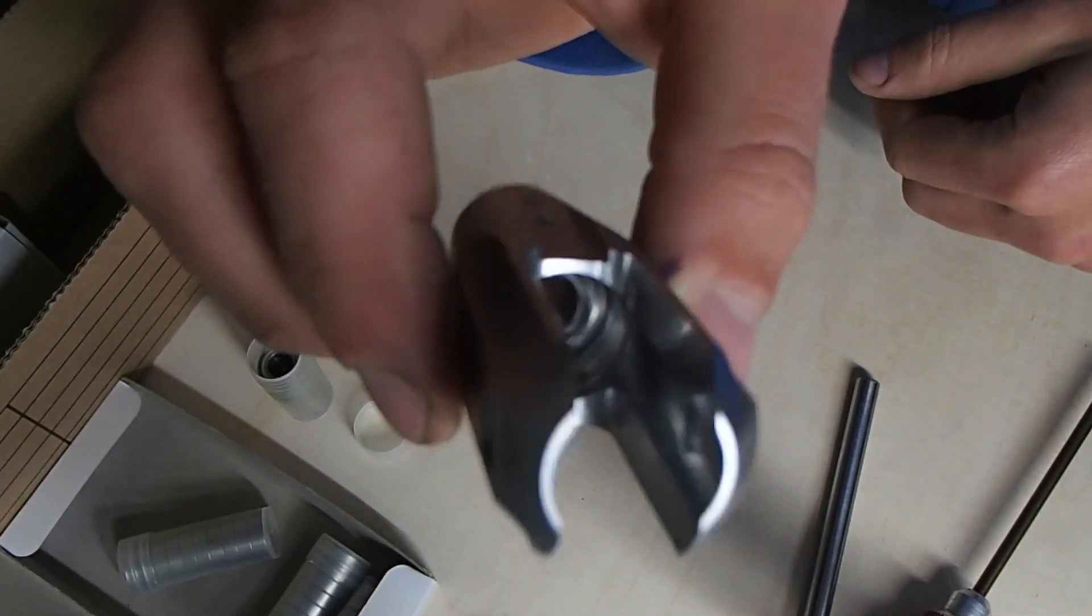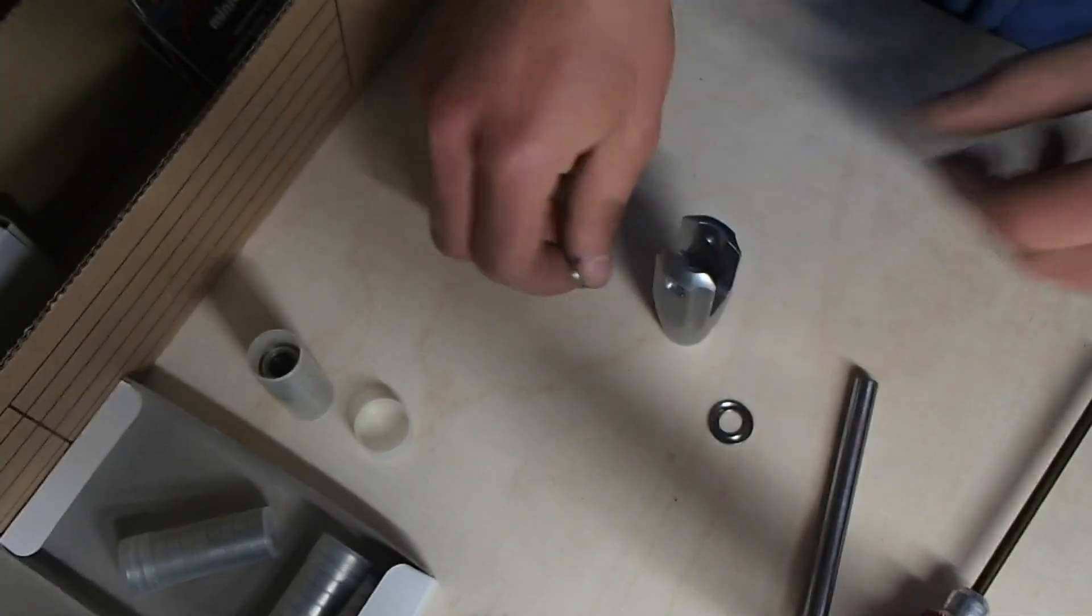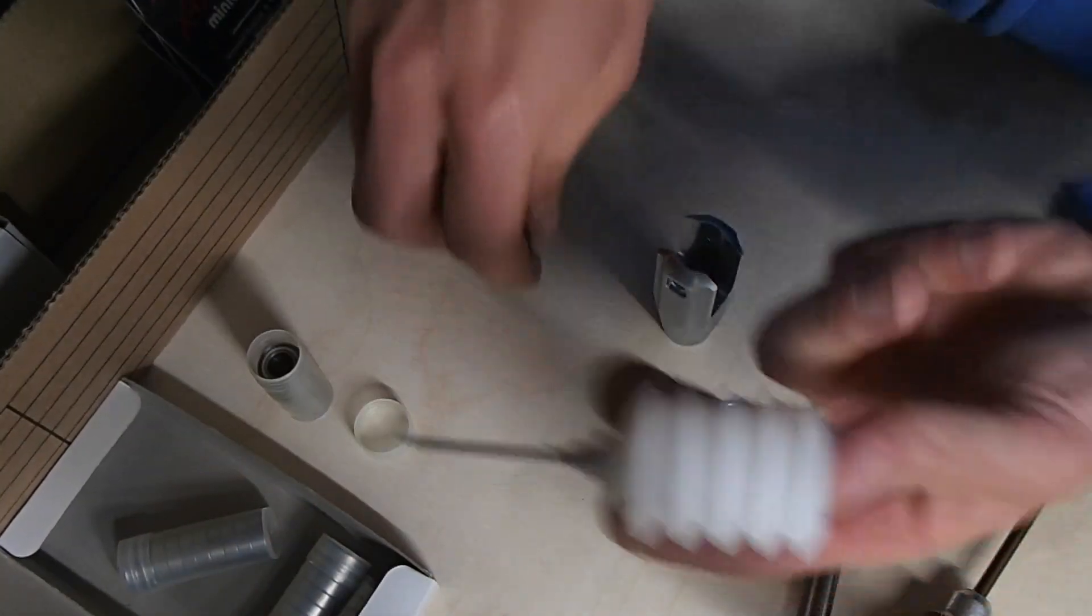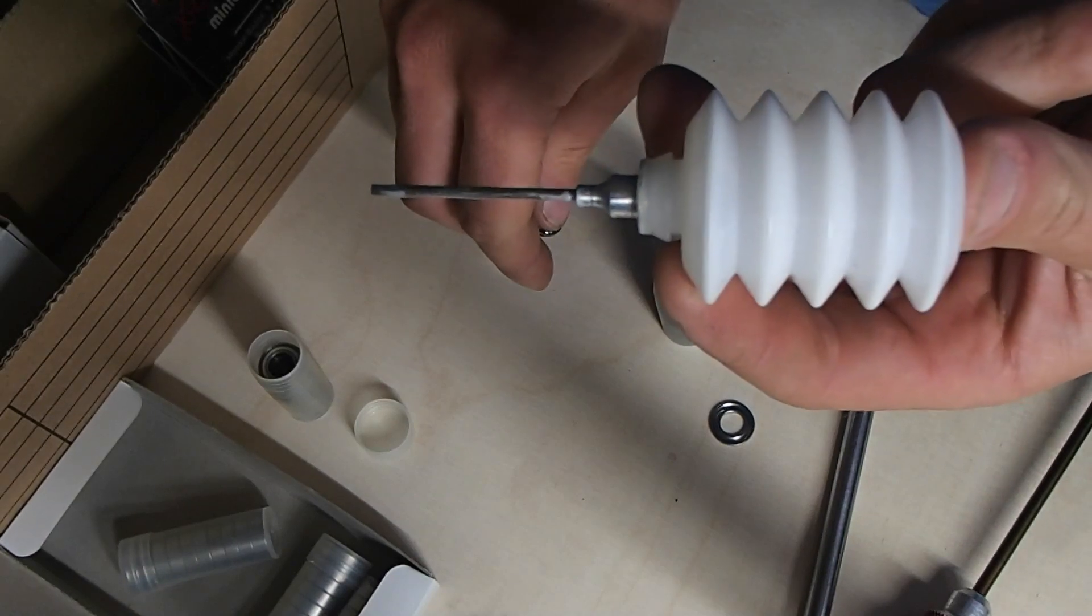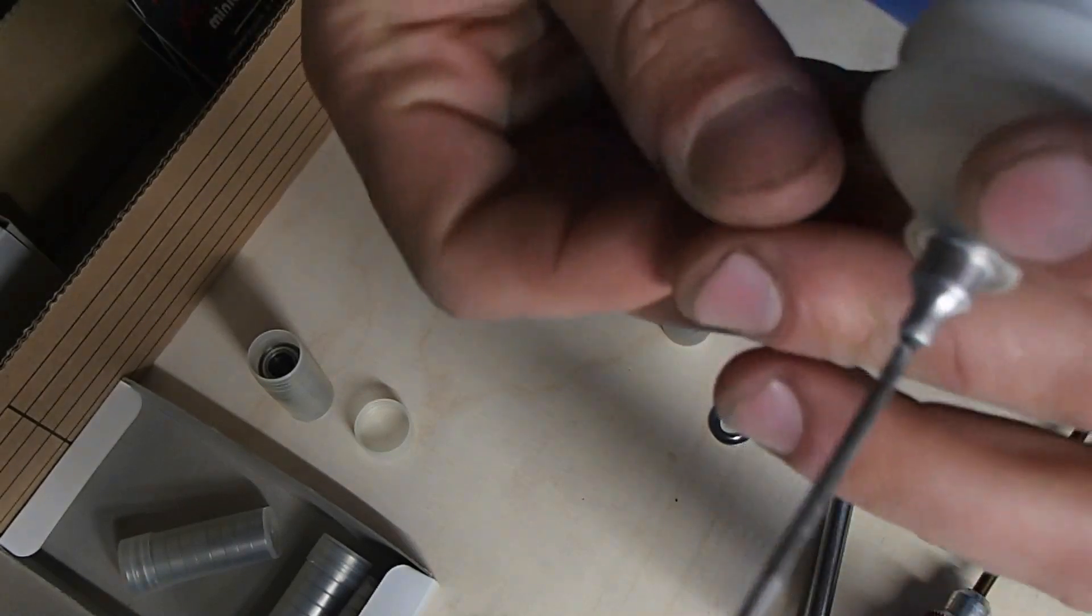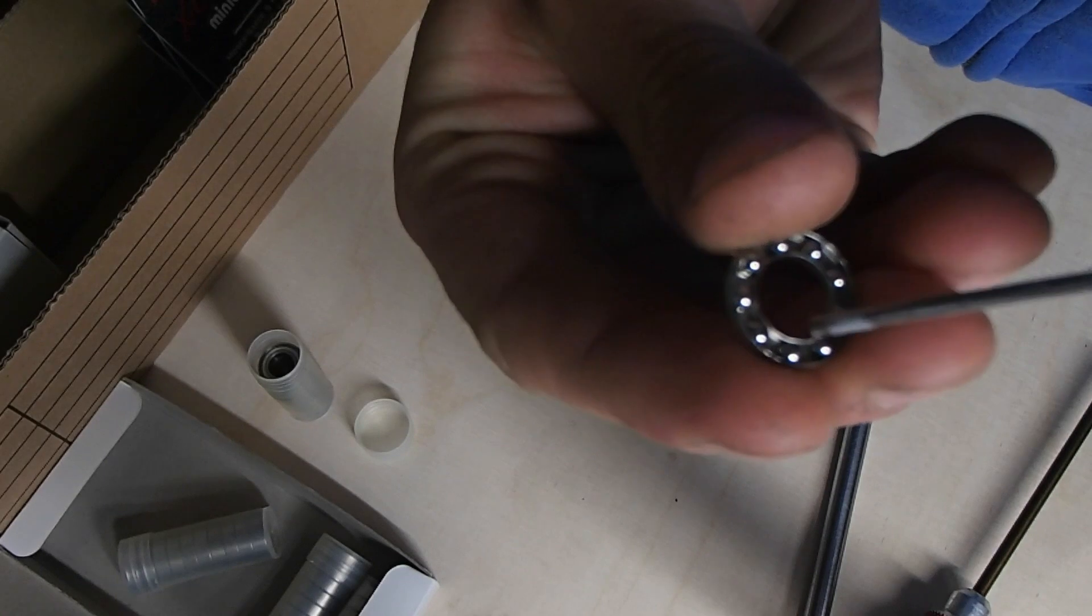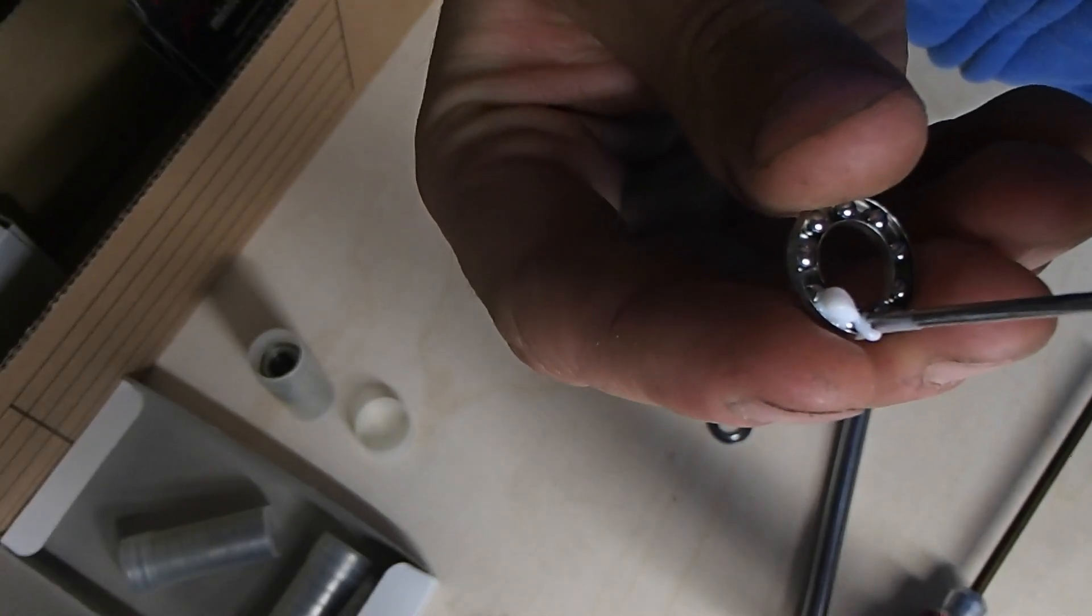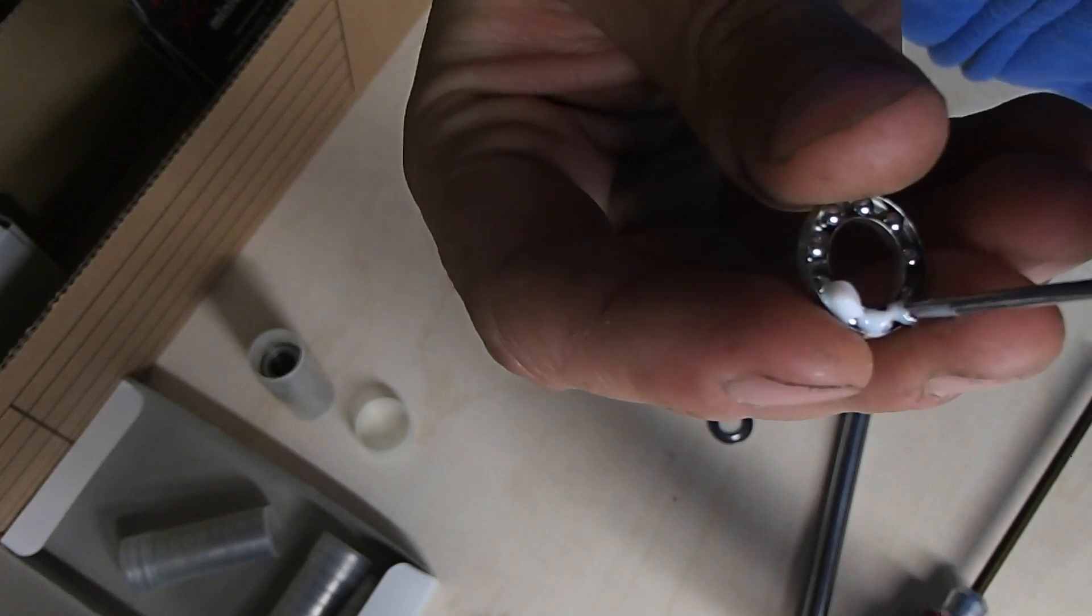Then you take your thrust bearing and you grease your thrust bearing with premium Miniature Aircraft grease. Here we go - never have too much grease.